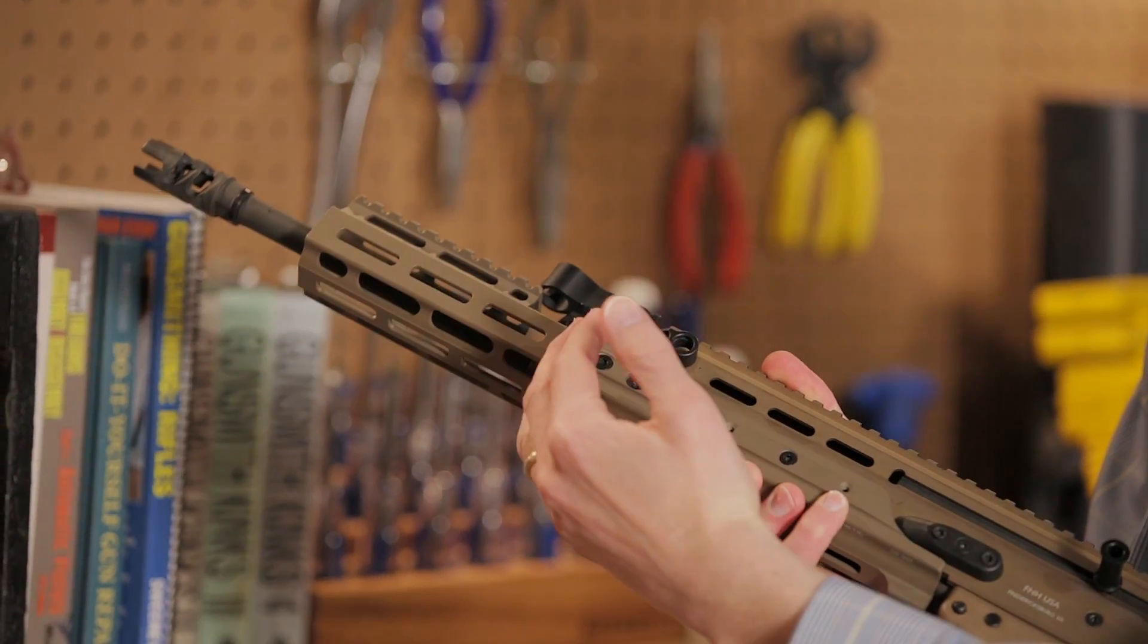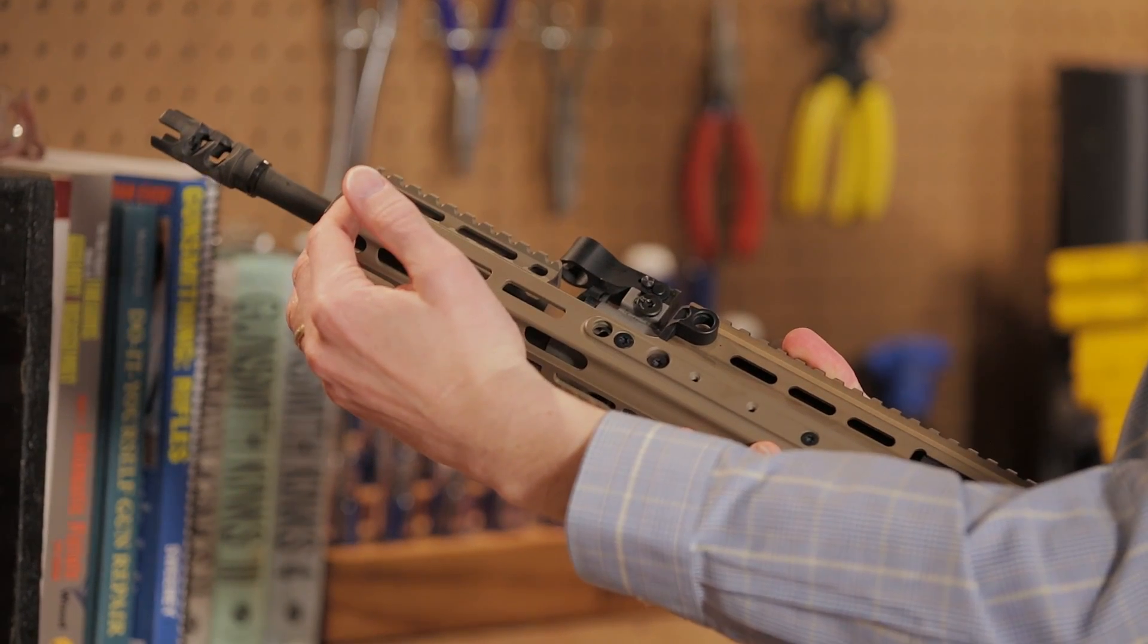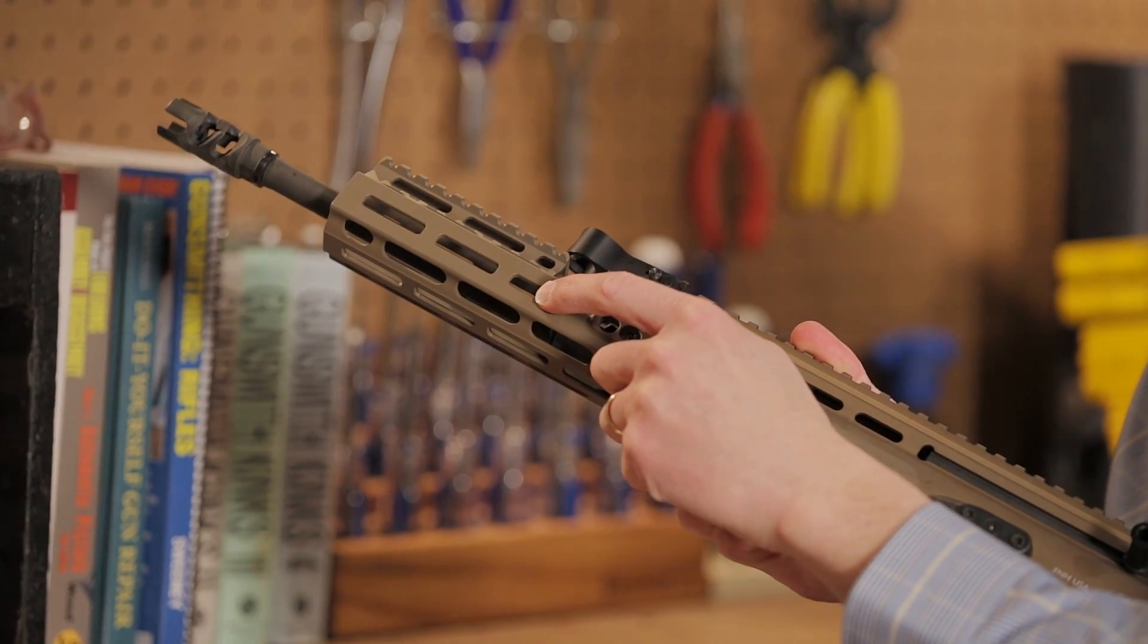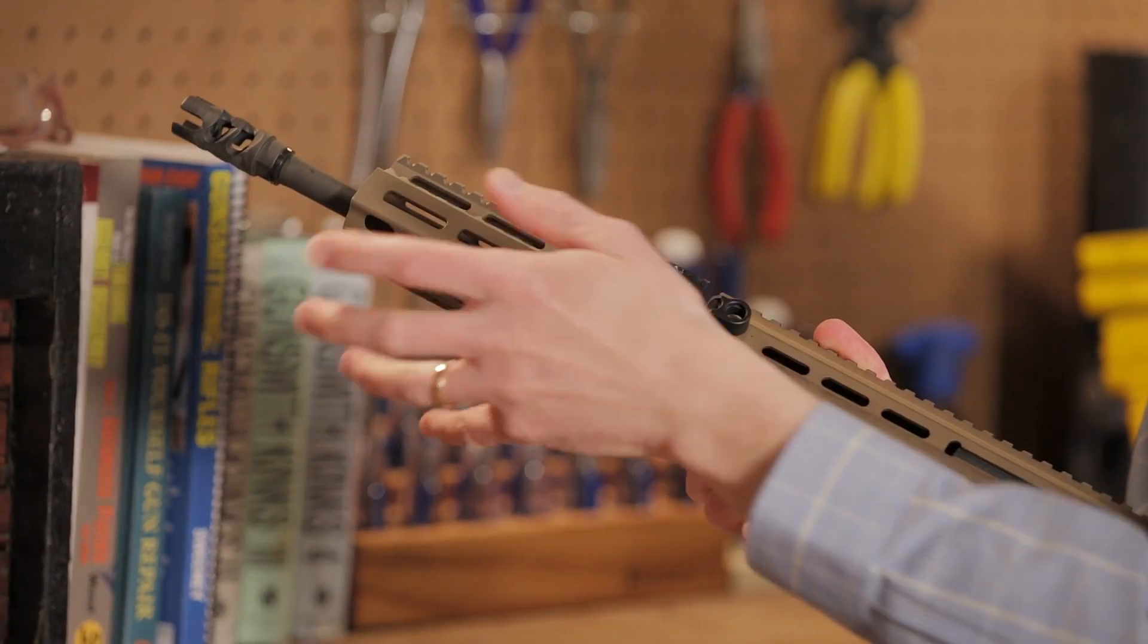Extends all the way out front. Comes in different lengths. This is the six and a half inch here. That designates the length out here. Has the M-LOK Magpul system, so you can attach a variety of accessories.